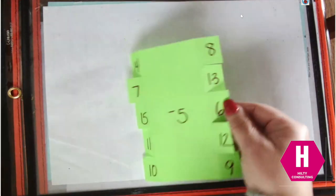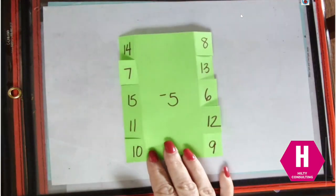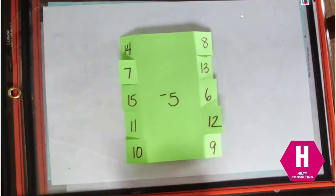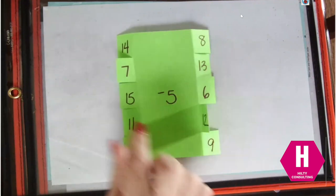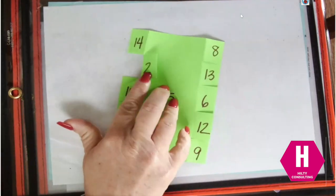Turn it to the back and now you're going to work on that inverse operation of subtraction. So now I'm going to be subtracting 5. 12 minus 5 is 7. 7 minus 5 is 2.